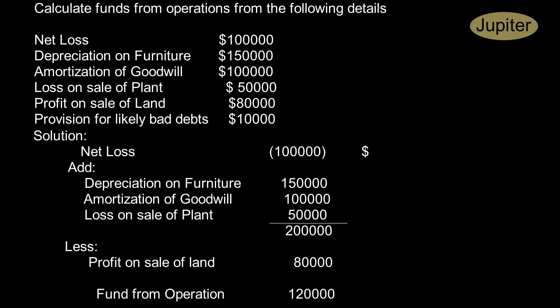If it decreases working capital, it's called funds depleted from operations. We need to deduct all the expenses which alter working capital from sales, and we need to add all the incomes which alter our working capital to arrive at funds from operations.